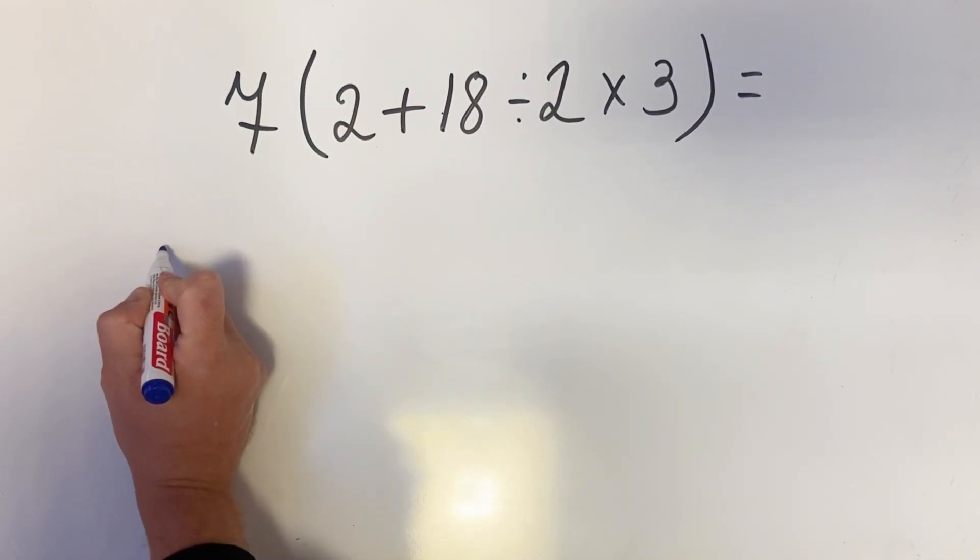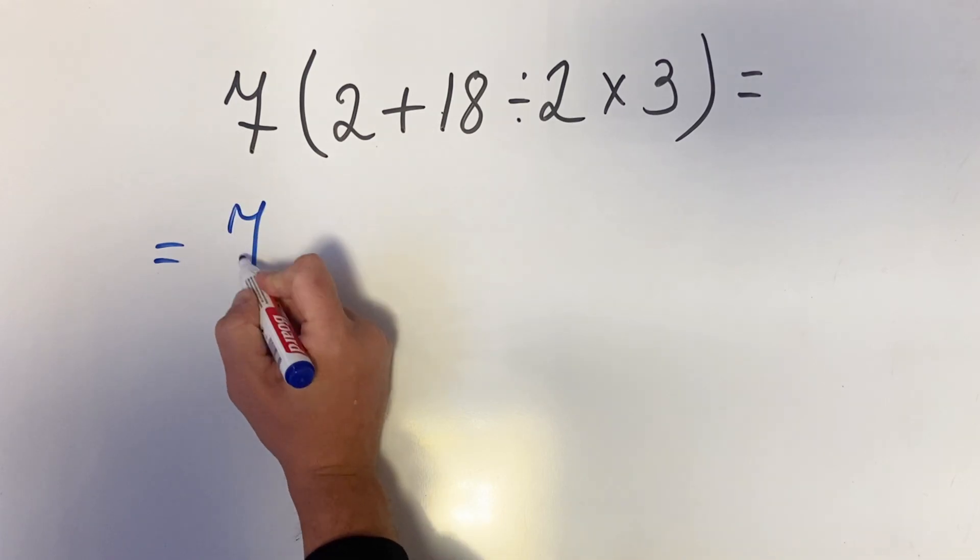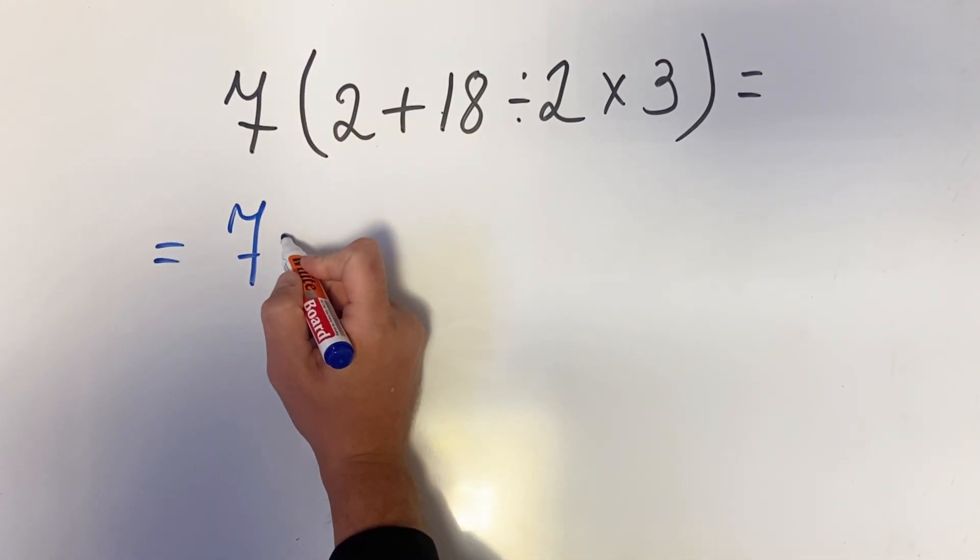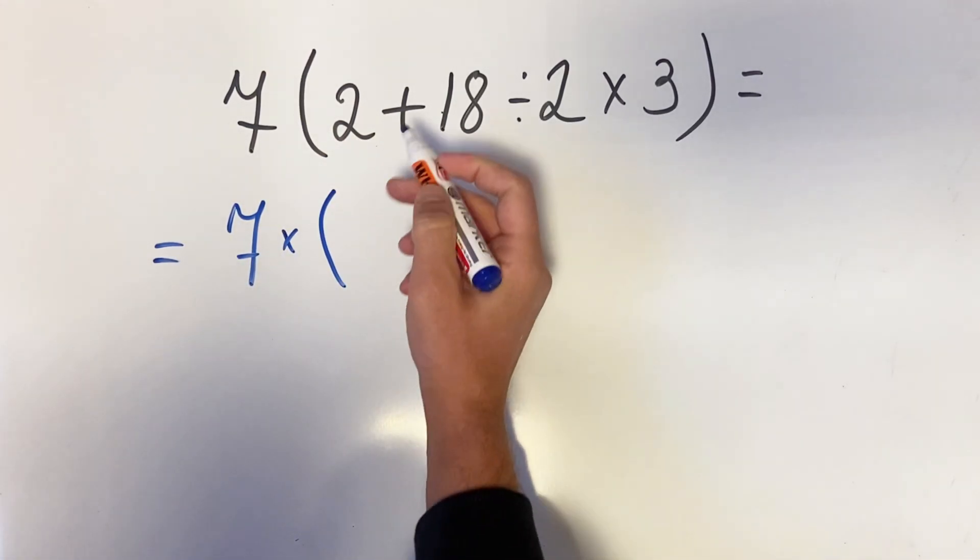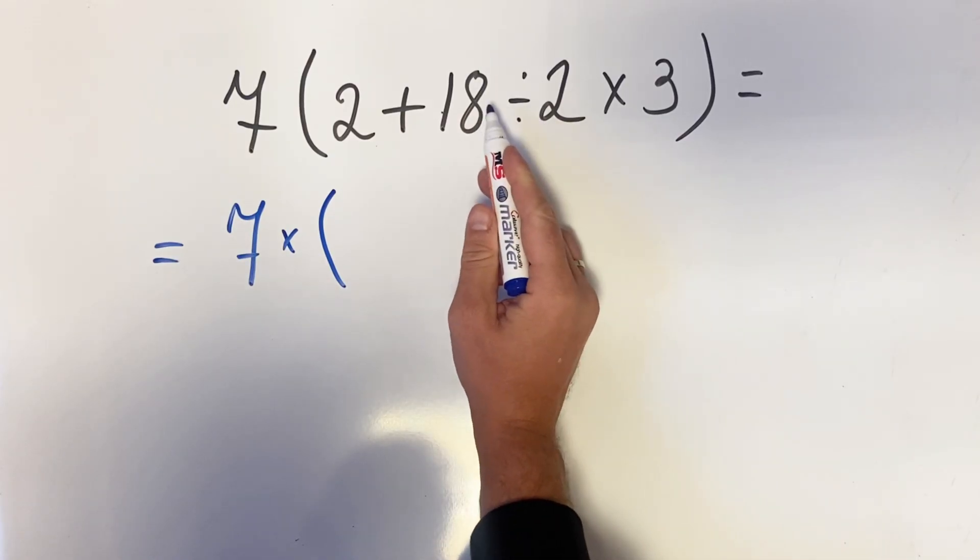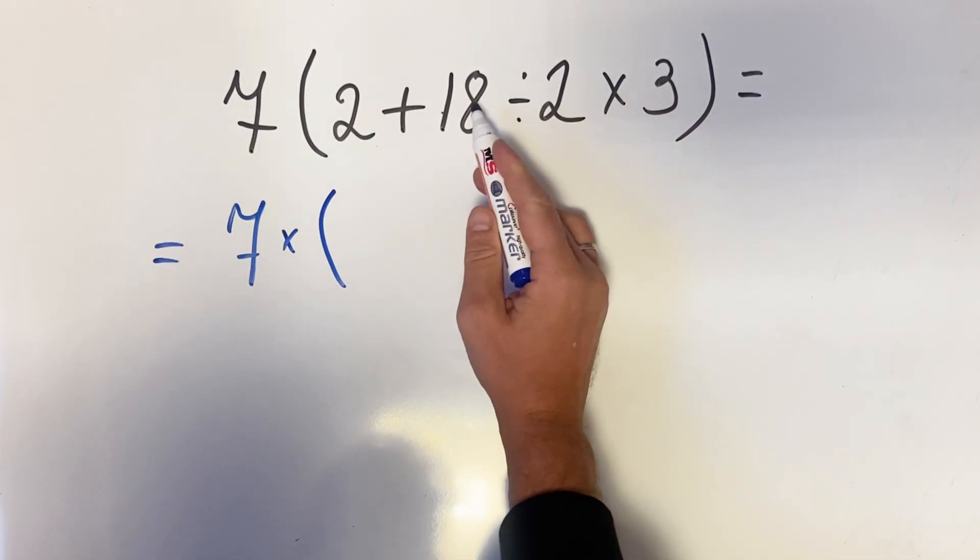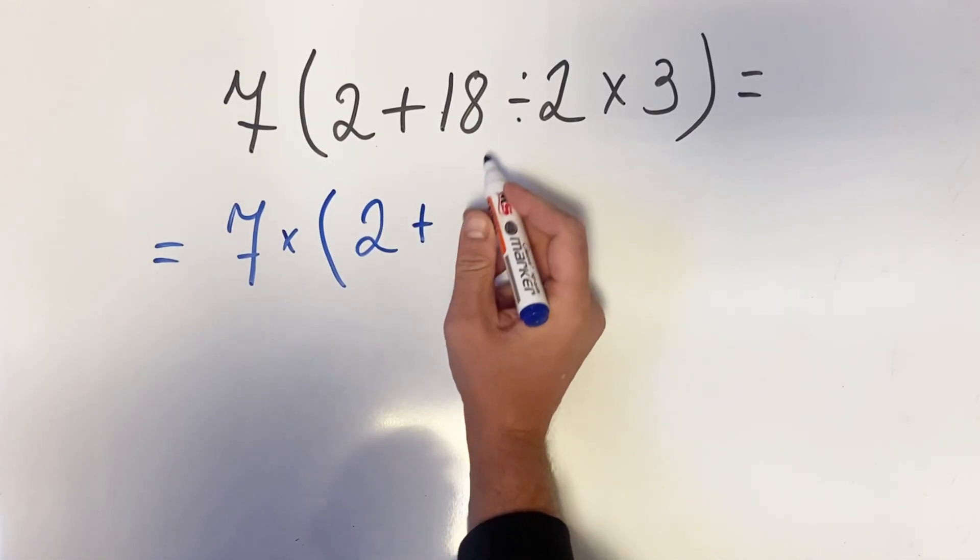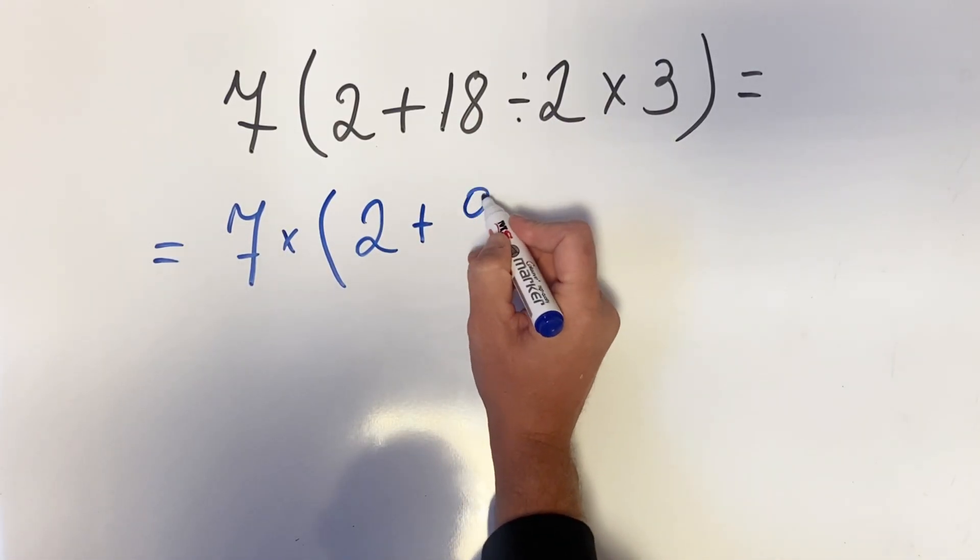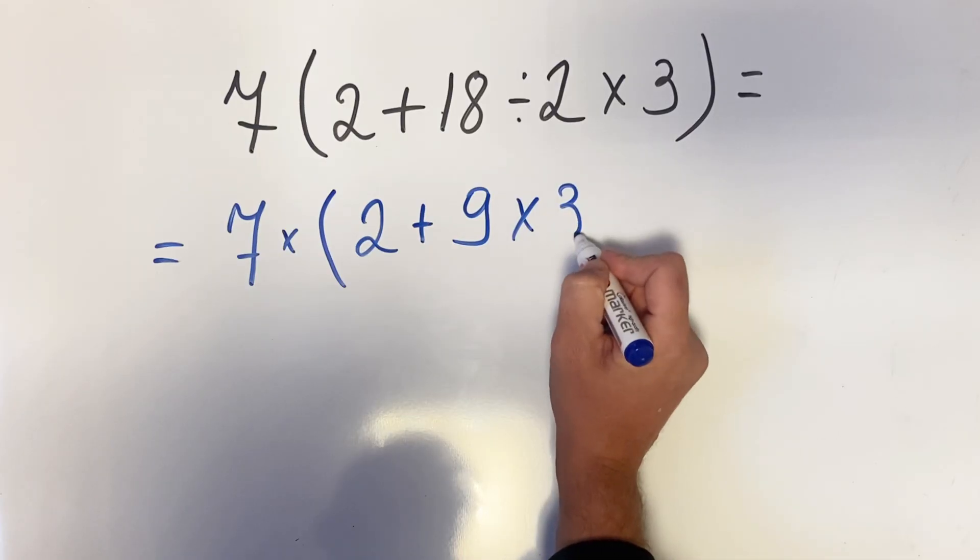So we do the division and multiplication first from left to right. What we get is 2 plus 18 divided by 2 is 9 multiplied by 3.